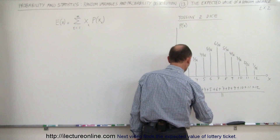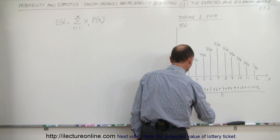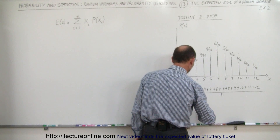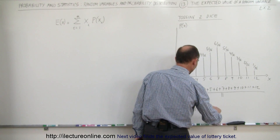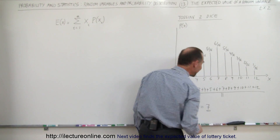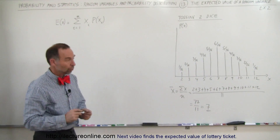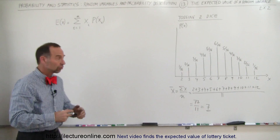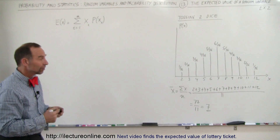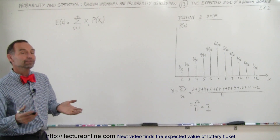So this would be equal to 77 divided by 11, which is 7. So the average value when you toss dice is 7.